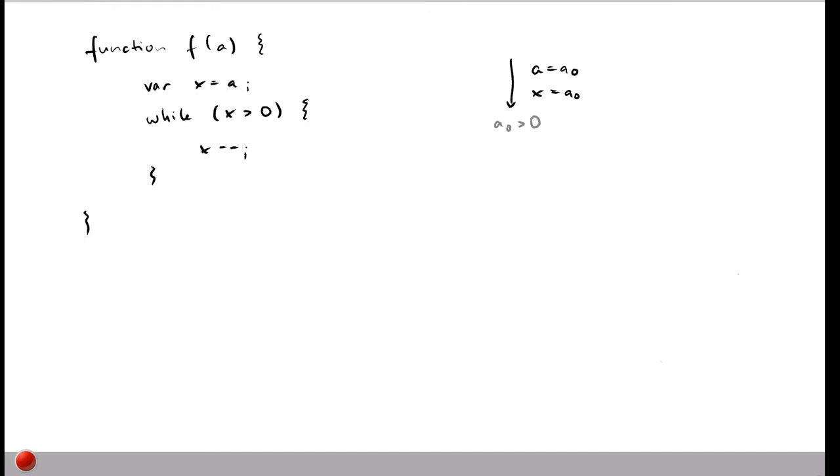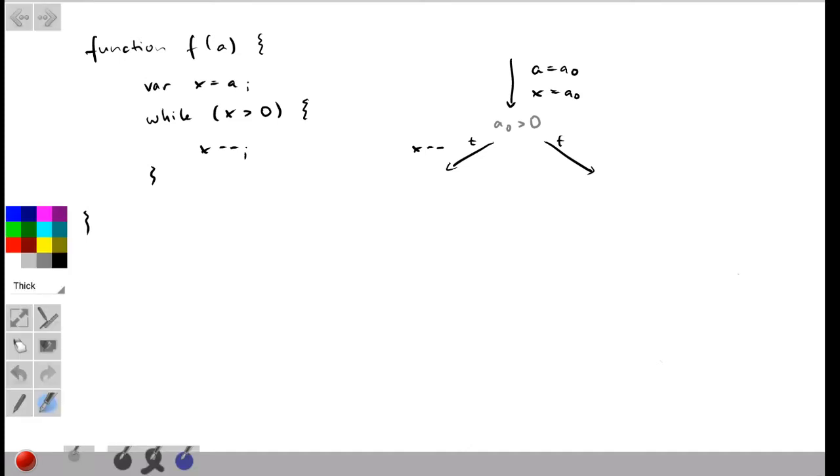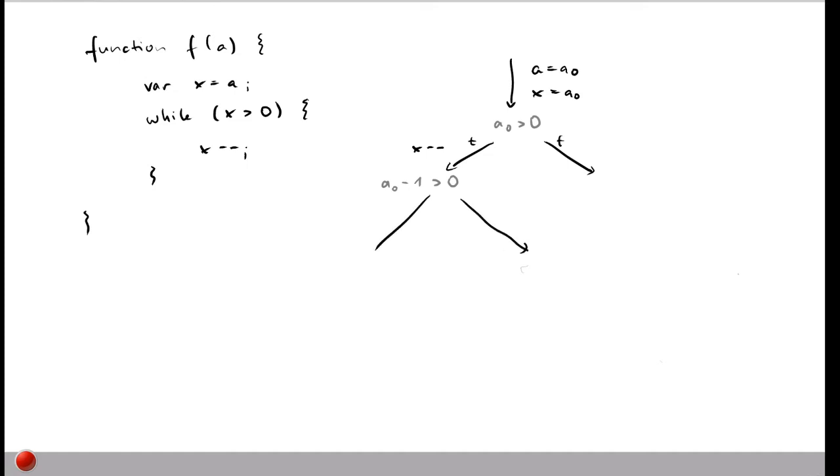And of course this check may return true or false. If it returns false we are done because we won't enter this while loop at all. If it returns true, then we'll have this x minus minus statement on this edge in the graph and then we'll reach again the conditional of the loop. And now because x has been decremented, this check that x is larger than 0 actually means that we are checking whether a0 minus 1 is larger than 0.